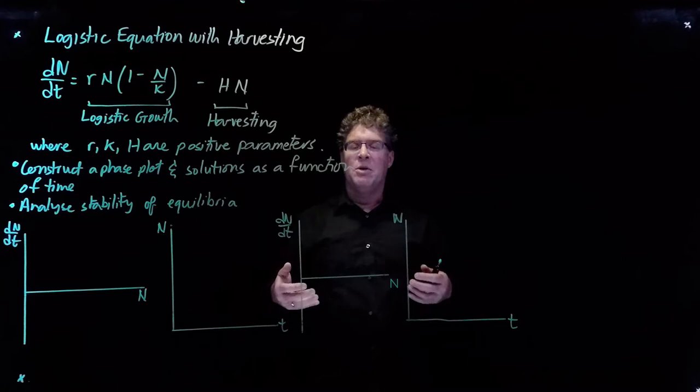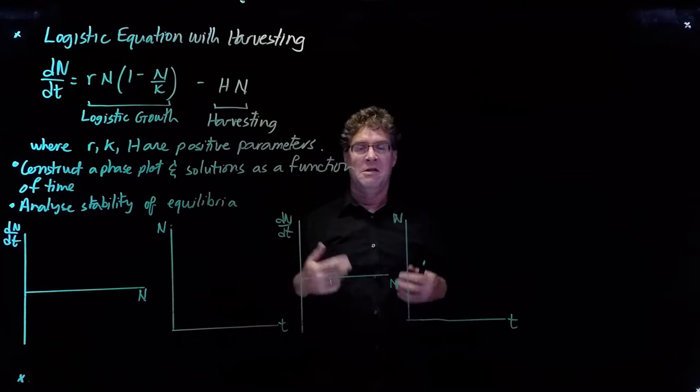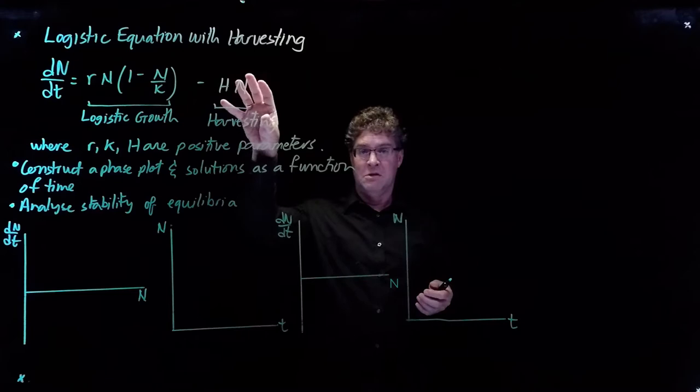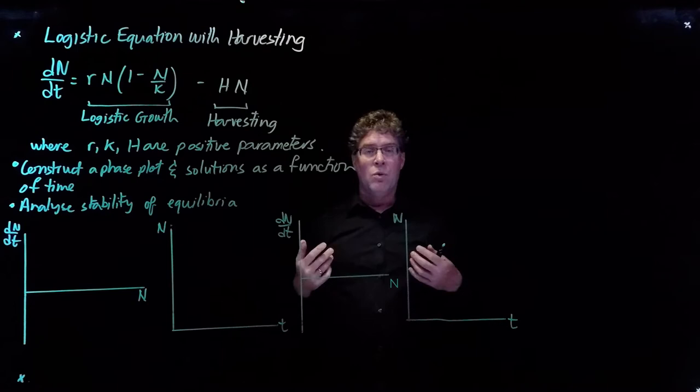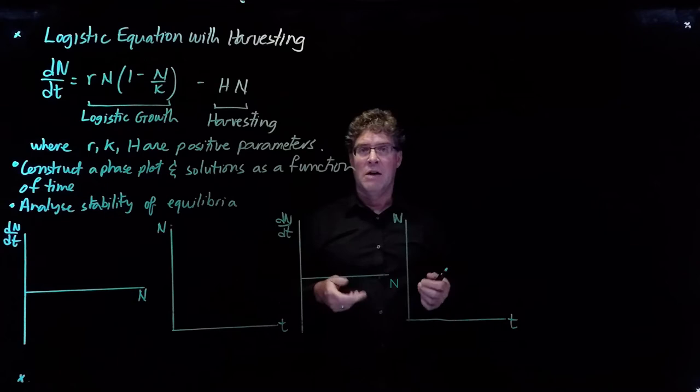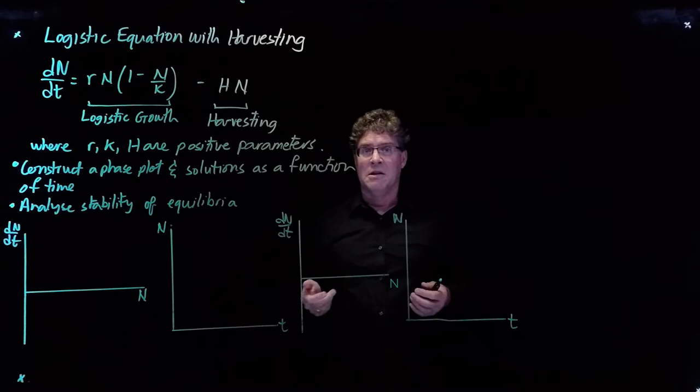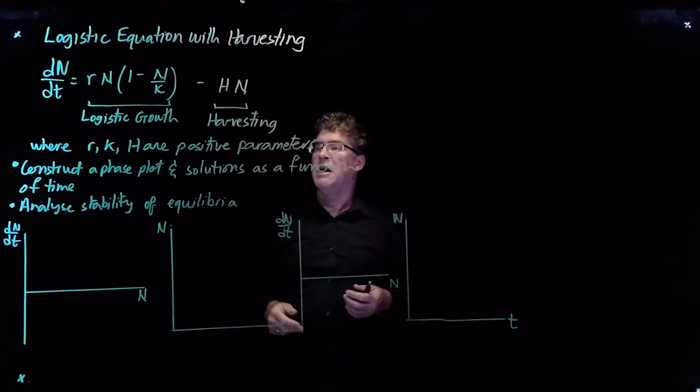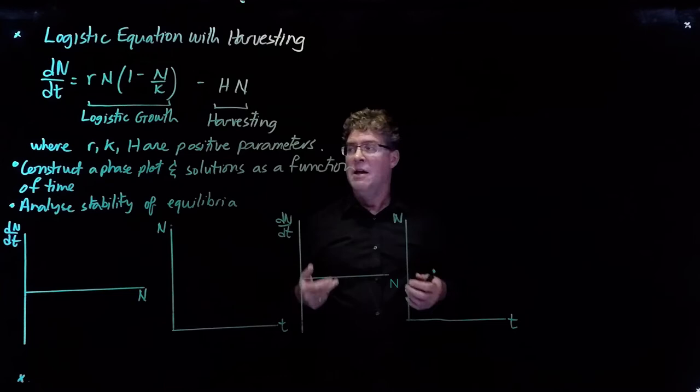We're going to add a term describing harvesting. Because it's reducing the population size, we have a minus sign. H is a harvesting rate — a positive parameter — multiplying n, representing the rate at which individuals are removed from the population by harvesting. We'll ask: is there a level of harvesting too high that drives the population to local extinction? What is that critical level? We'll construct a phase plot, draw solutions as a function of time, and analyze the stability of the equilibria.